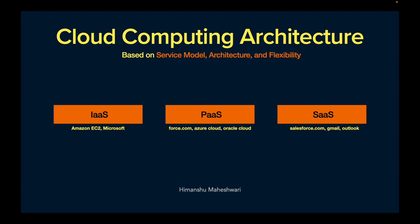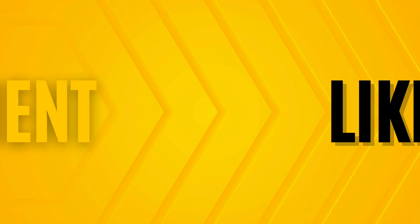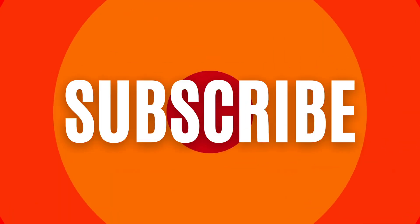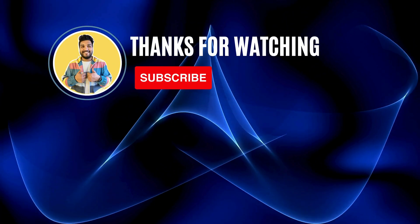These are the three models of cloud computing architecture based on service model and flexibility. And based on ownership, there are four categorizations: public cloud, private cloud, hybrid cloud, and community cloud.